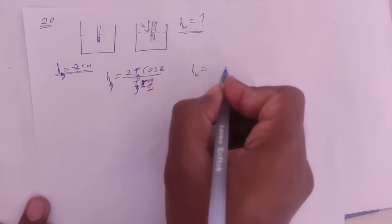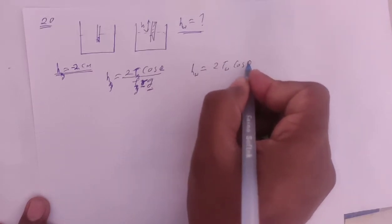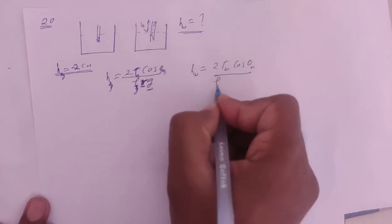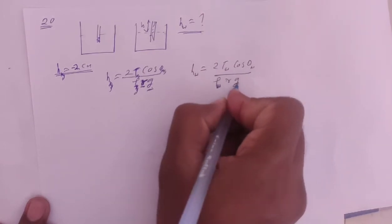For water, height h_w equals 2t tension of water times cos angle of water divided by rho density of water times r times g.